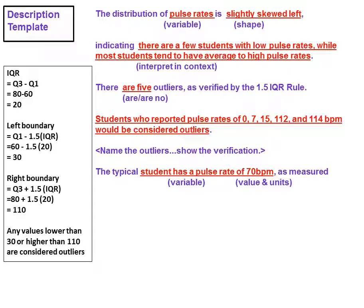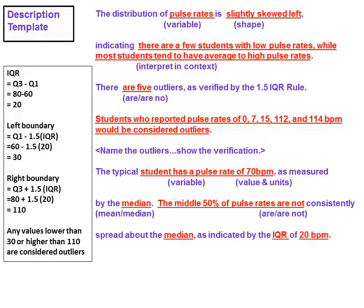The typical student has a pulse rate of 70 beats per minute as measured by the median. The middle 50 percent of pulse rates are not consistently spread about the median as indicated by the IQR of 20 beats per minute.